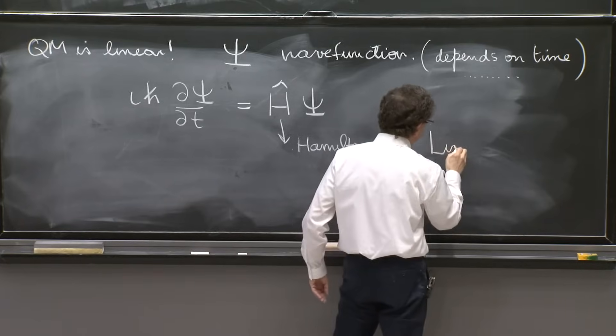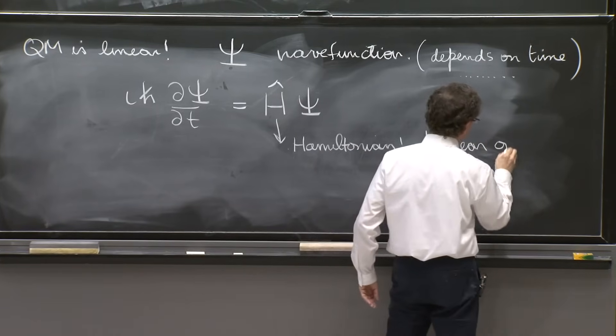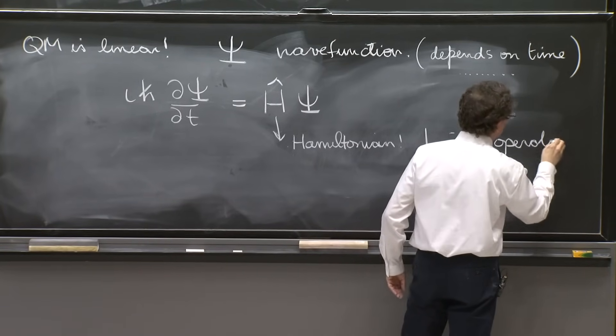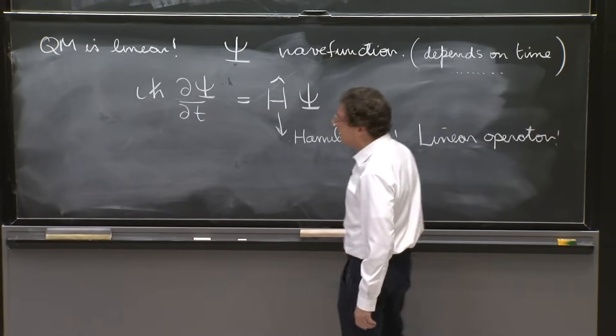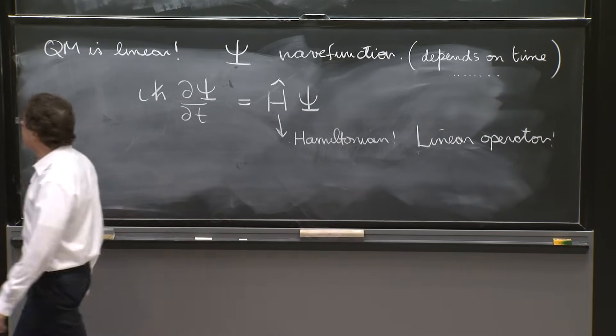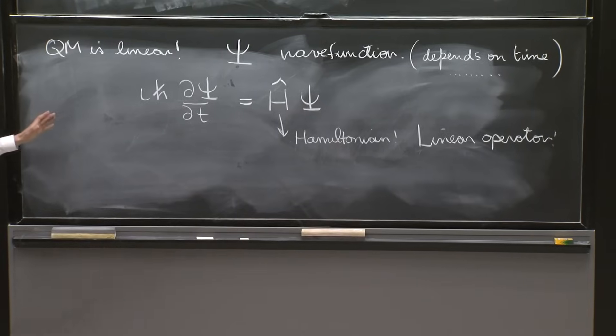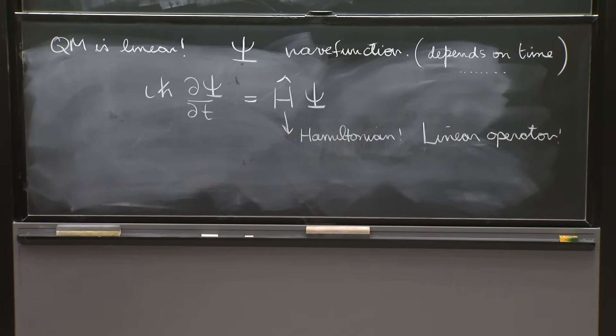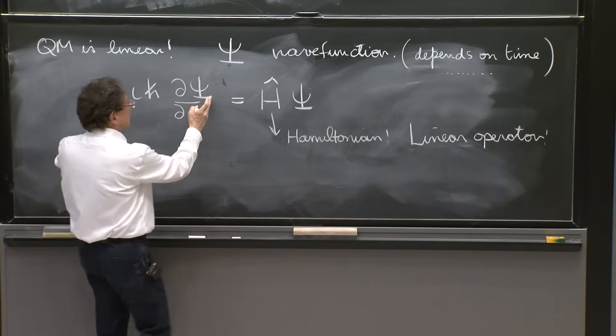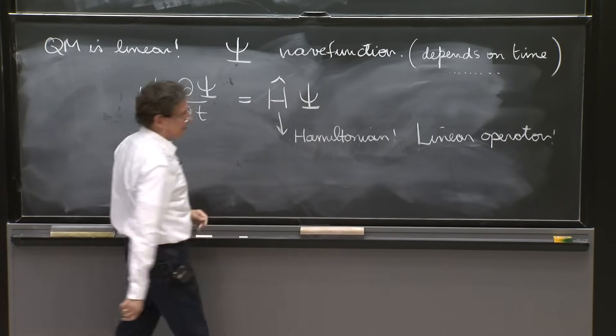And it's a linear operator. That's why I had to explain a little bit what a linear operator is. This is the general structure of the Schrodinger equation. Time derivative and a linear operator.